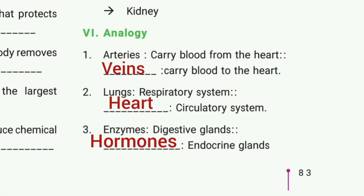In analogy, first one: arteries carry blood from the heart; veins carry blood to the heart. Then second one: lungs — respiratory system; then heart — circulatory system. Then third one: enzymes — digestive glands; hormones — endocrine glands.